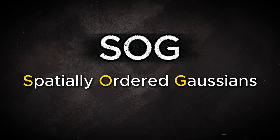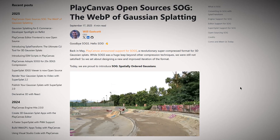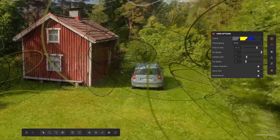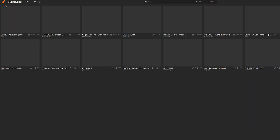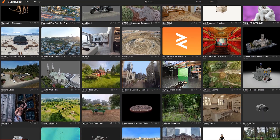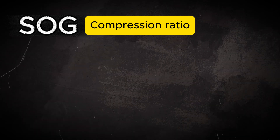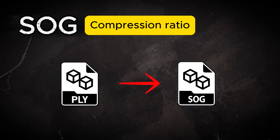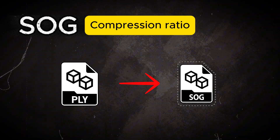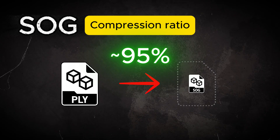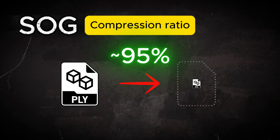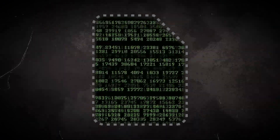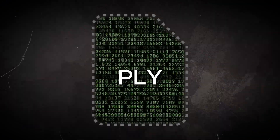It is a new format that has been open-sourced quite recently by the PlayCanvas company, the same group that developed the SuperSplat editor and the public gallery before. The compression ratio that can be achieved here is quite incredible. The SOG method can shrink Gaussian PLY files to over 90% less space.